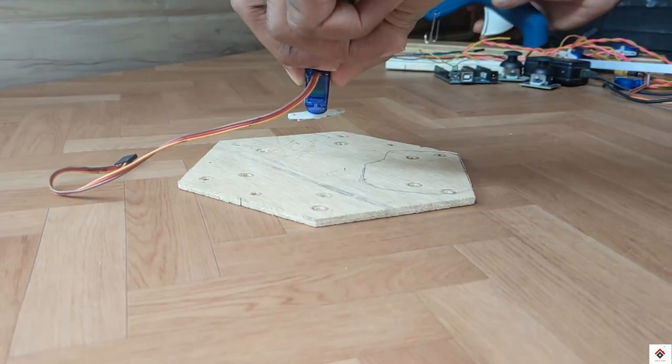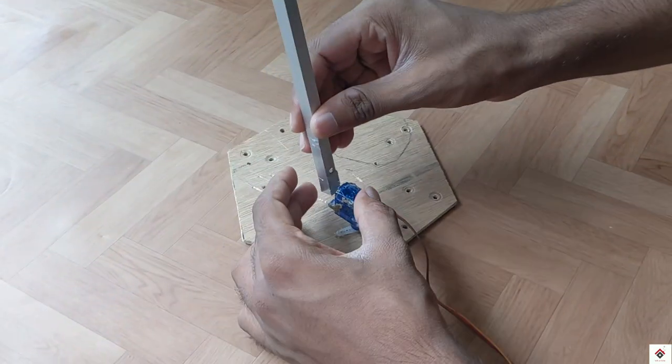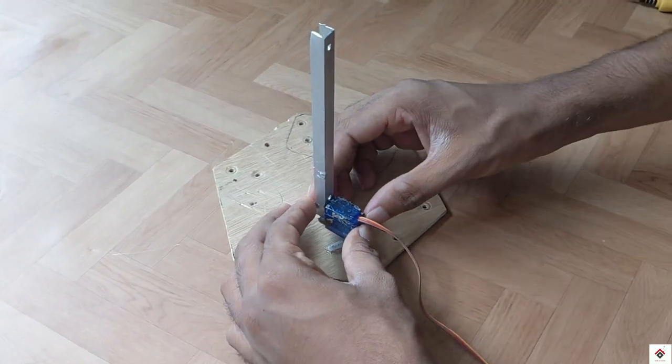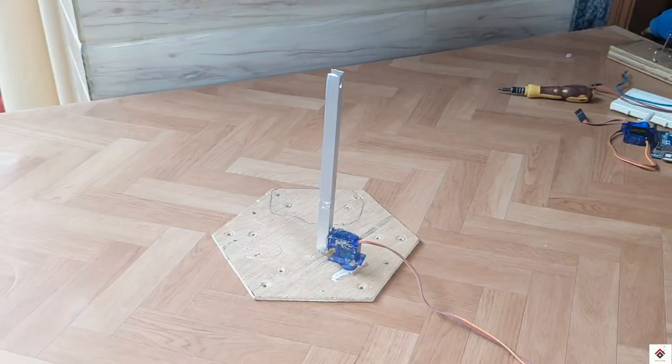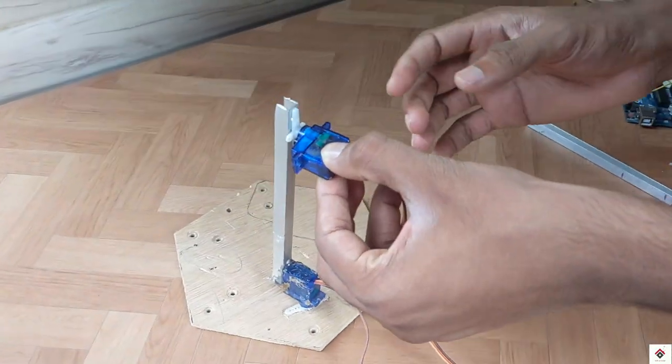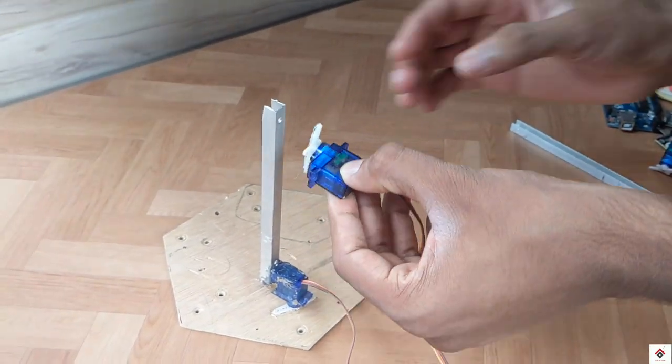This will be for the horizontal or the x-axis movement, and the second servo motor will be for vertical or y-axis movements.